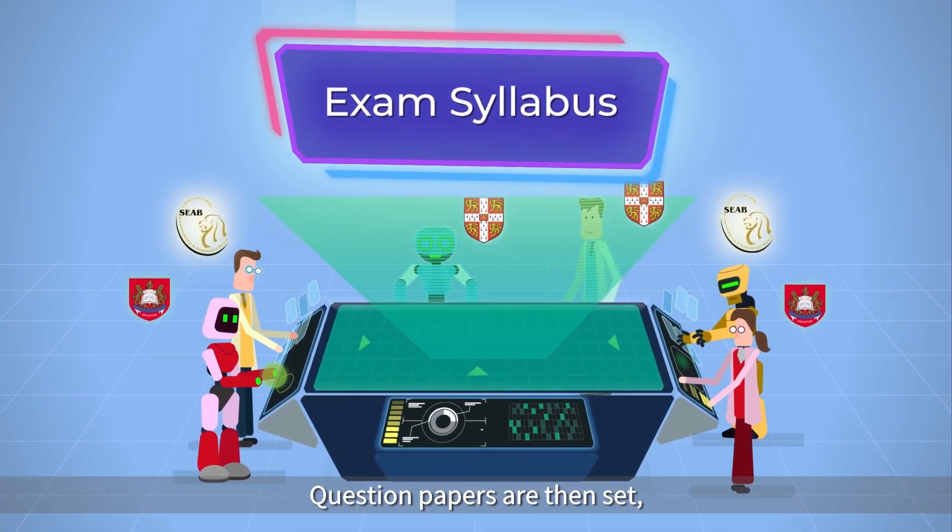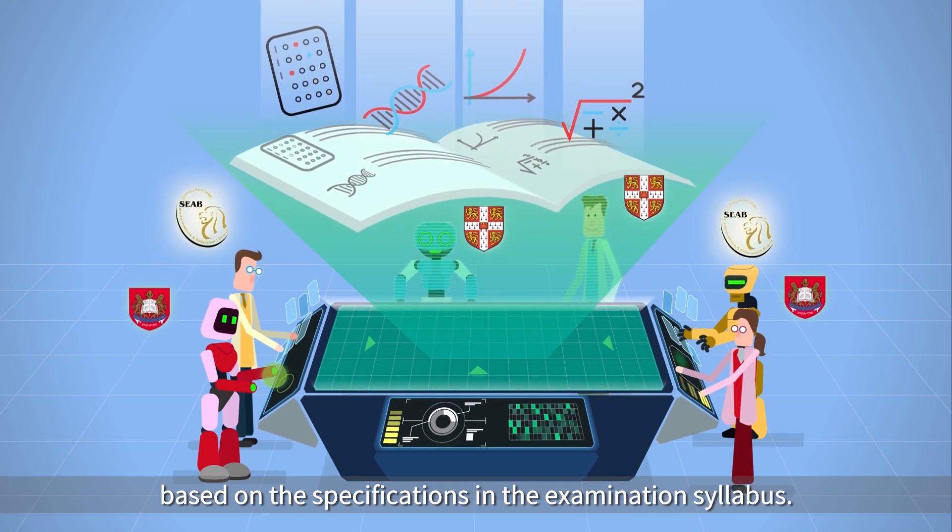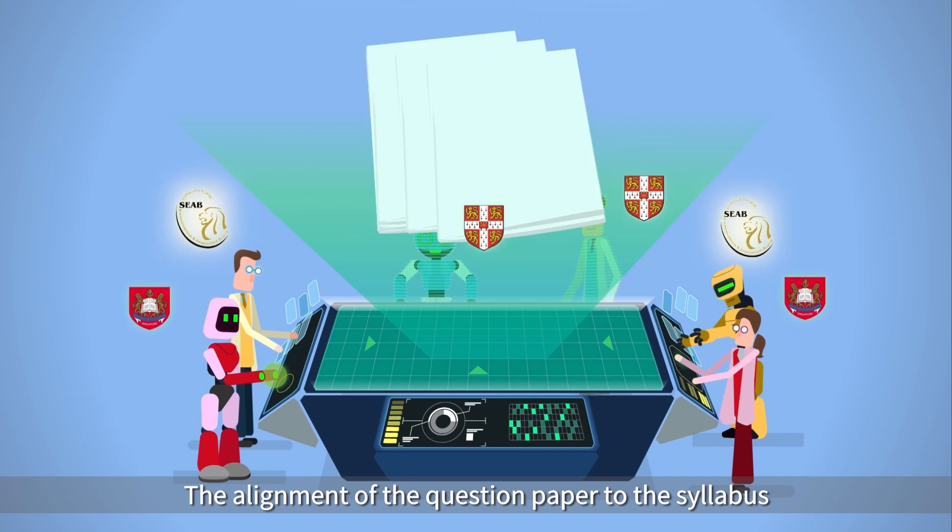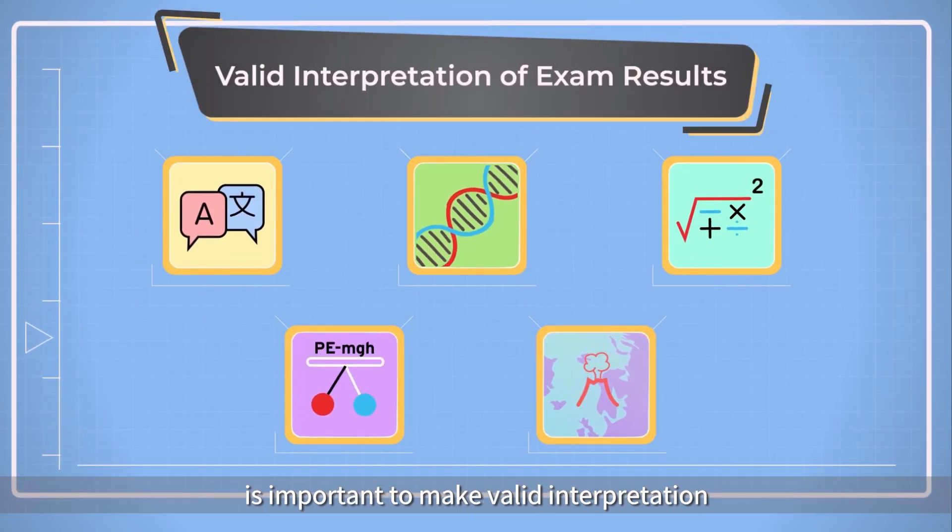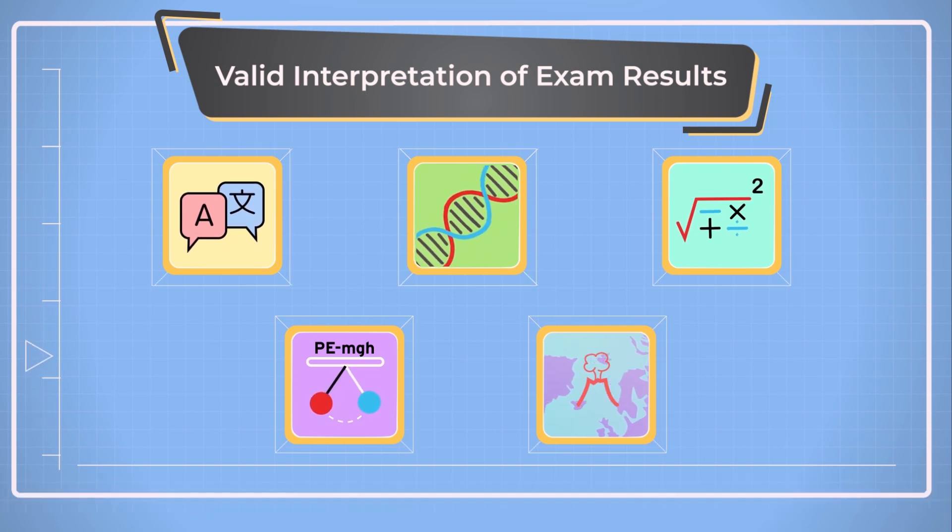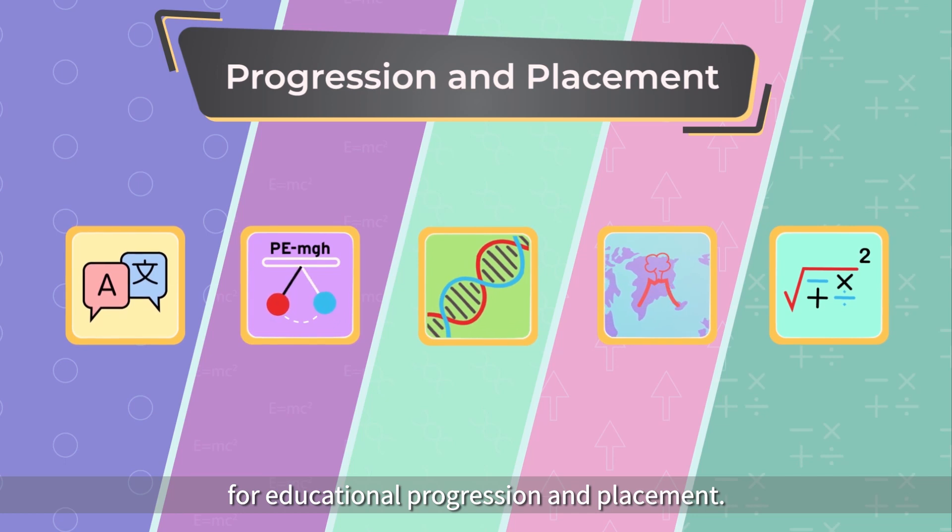Question papers are then set based on the specifications in the examination syllabus. The alignment of the question paper to the syllabus is important to make valid interpretation of the exam results. These results are later used for educational progression and placement.